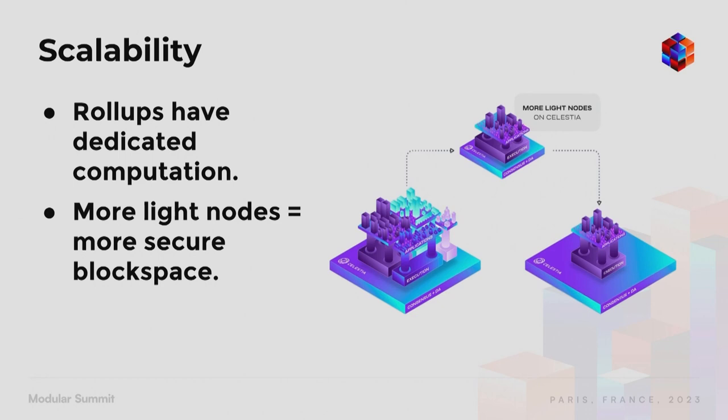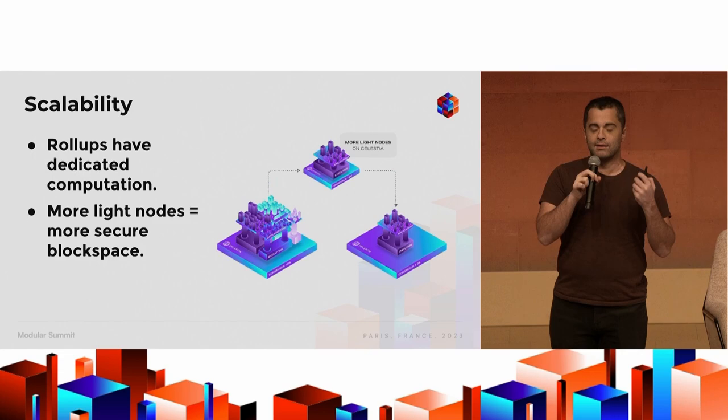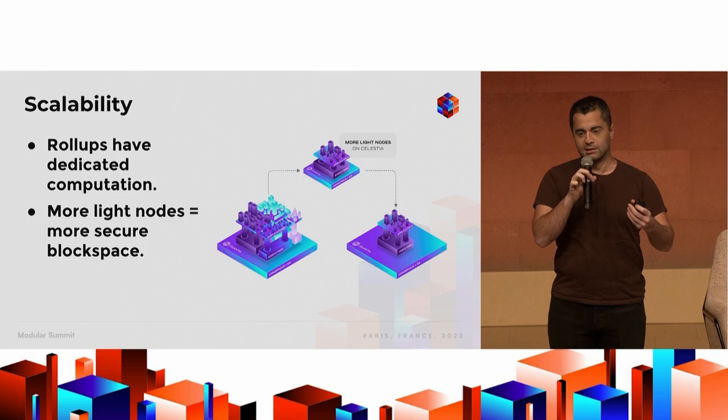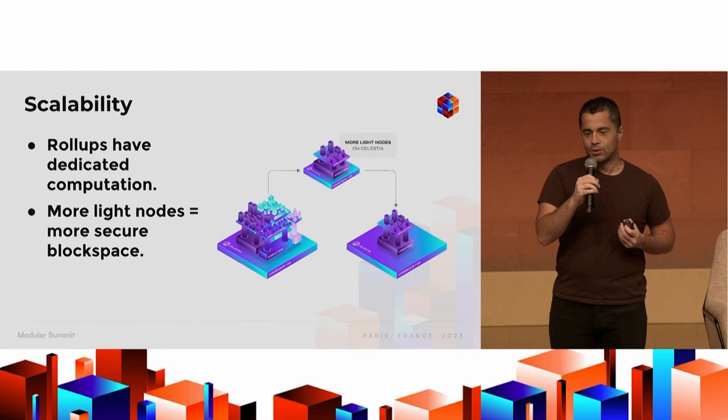Secondly, thanks to data availability sampling, you have a loop where the more light nodes you have, the more block space you can have in a secure way. The more light clients that are sampling, the more data they can collectively reconstruct and the bigger the block size you can have. In a system that does data availability sampling, the light nodes are collectively storing and making all data available instead of just one or a few nodes.